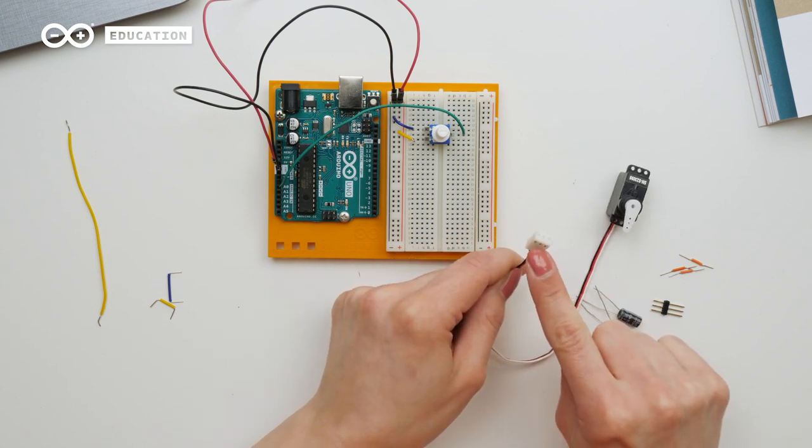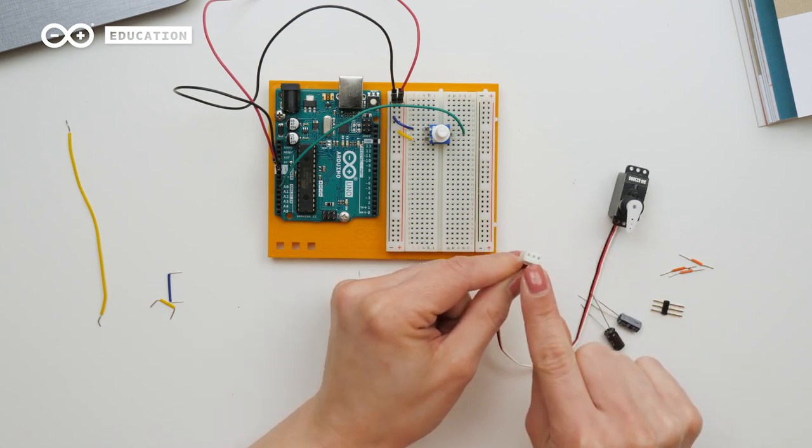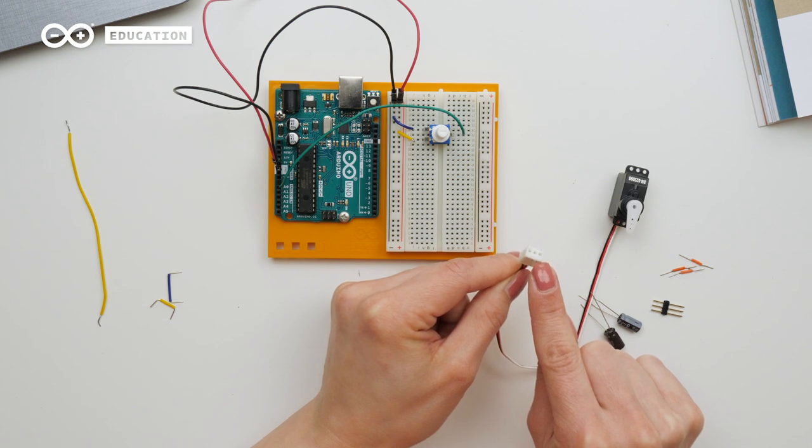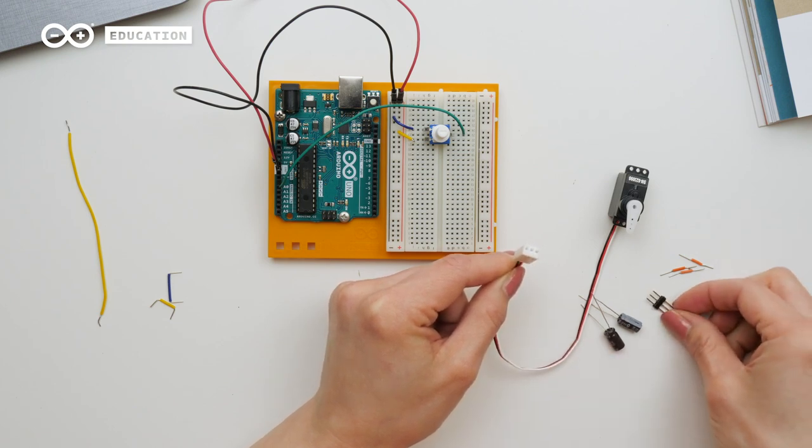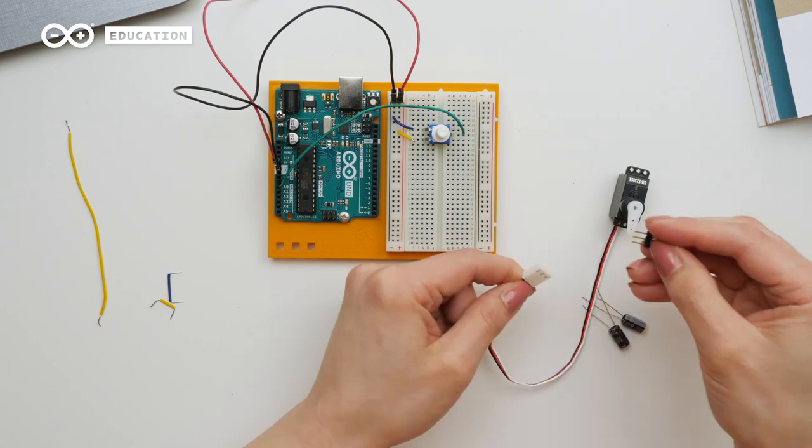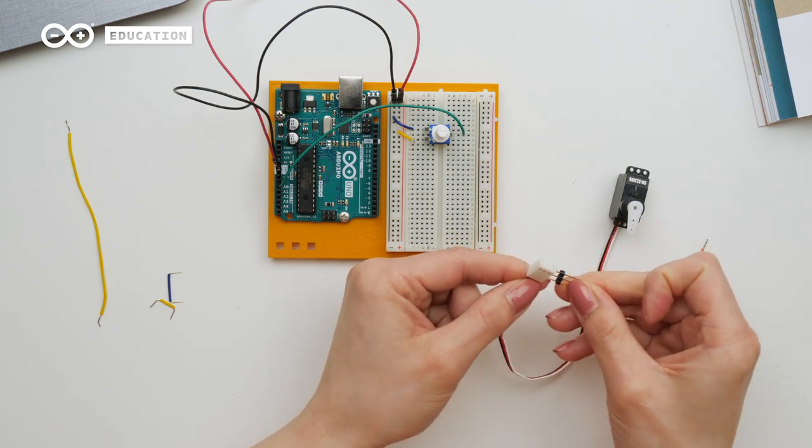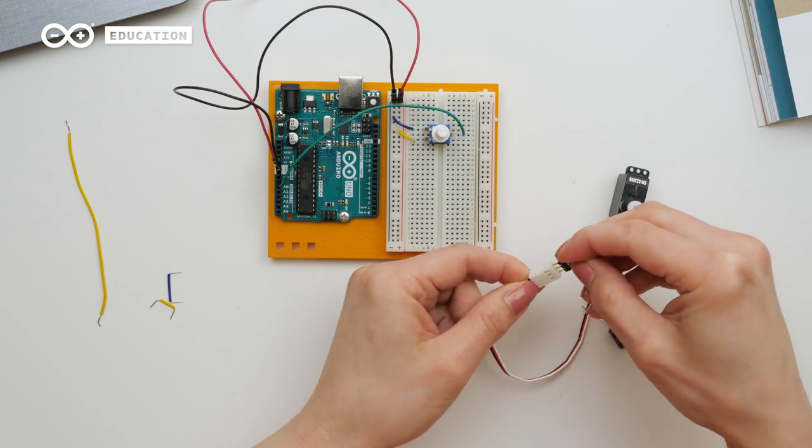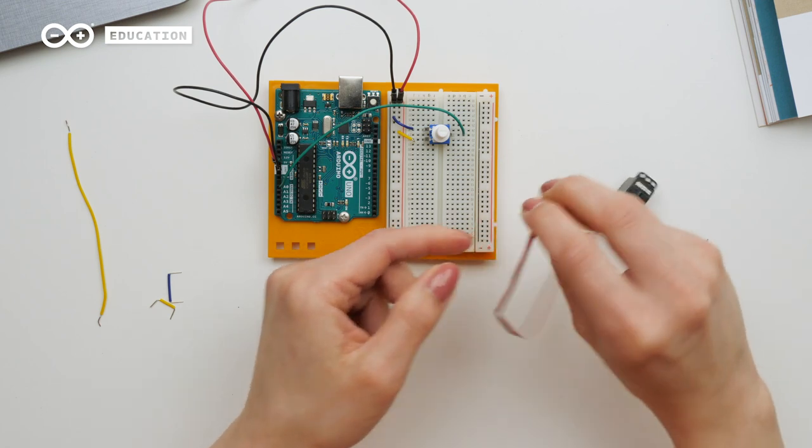As you can see, the servo has a female end here, so we need to take headers to be able to connect it to the breadboard. You have these in your starter kit. You can also use small wires. I take the one that has a bit shorter legs and put it here.